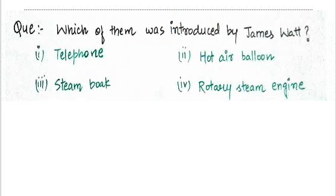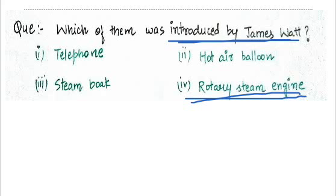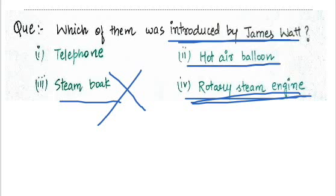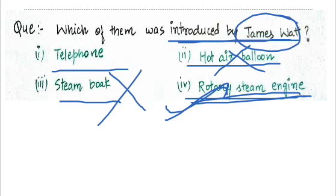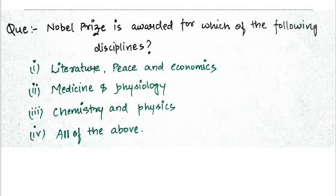Next question: Which of them was introduced by James Watt? It is the rotary steam engine. Don't be confused between steam engine and steam boat. Hot air balloon is not the right answer. Telephone was by Graham Bell. So rotary steam engine is the right answer, which was introduced by James Watt.